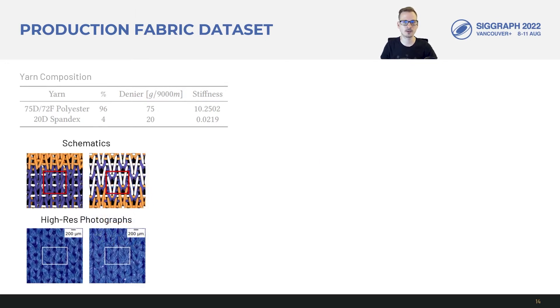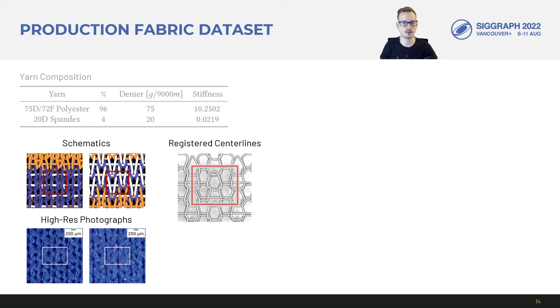For simulation, we'll need the yarn centerlines, as in the photographs. Because those are difficult to trace, we used both sets of images and some interpolation for the occluded parts to register the centerlines.